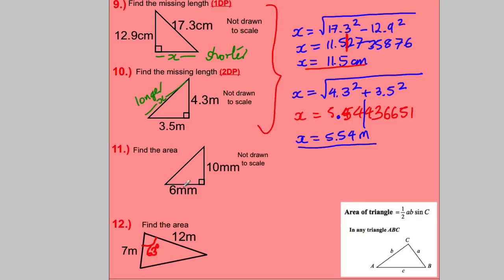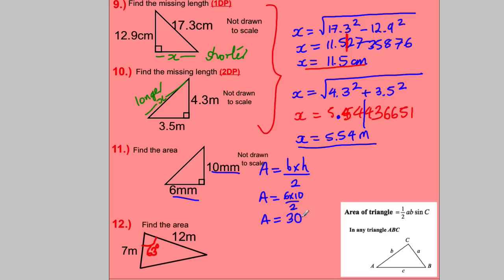To find the area of this triangle, we have the base and perpendicular height, so area = base × perpendicular height ÷ 2. Area = 6 × 10 ÷ 2 = 60 ÷ 2 = 30 mm².